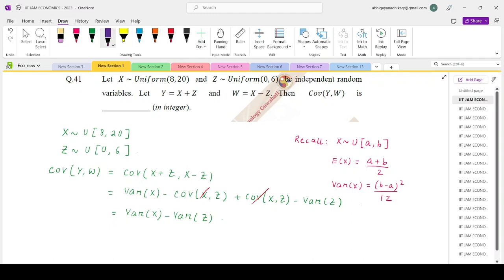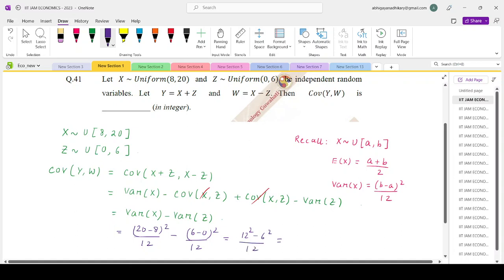given that X follows uniform (8,20), variance of X would be (20-8)²/12 minus variance of Z which is (6-0)²/12. That makes it 12² minus 6² divided by 12, which is (a²-b²), so (18×6)/12. This gives you your answer as 9.